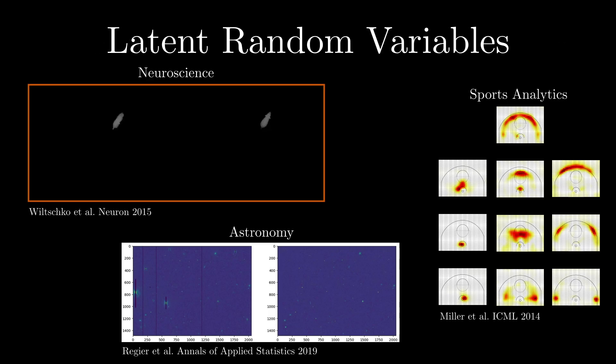Random variables also provide a powerful framework for thinking about latent structure in data. There are many, many examples of this kind of modeling. But here are three just from my own work with applications in neuroscience, astronomy, and sports analytics. In neuroscience, we use latent variable models to capture behavior and then connect that to neural activity. In astronomy, we use latent variable models to capture the properties of remote light sources like galaxies, for which we only have weak and noisy observations. And in sports analytics, latent variables give us a way to think about the characteristics of different players. Here, in work by my former student Andy Miller, you can see how the shooting patterns of NBA players can be broken down into latent factors.